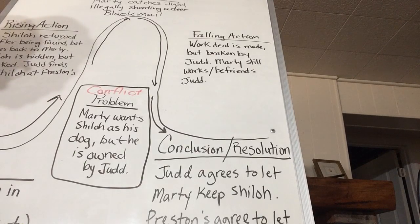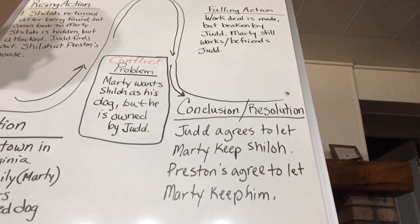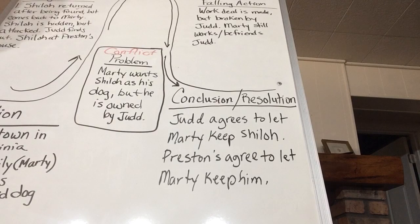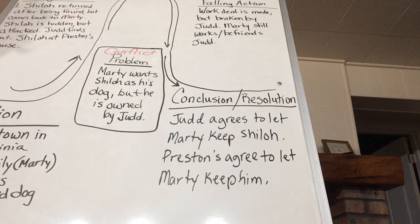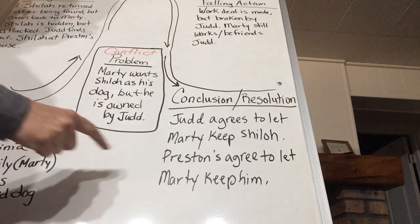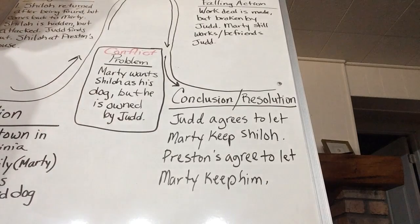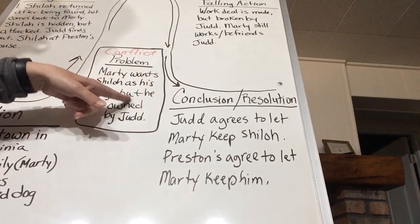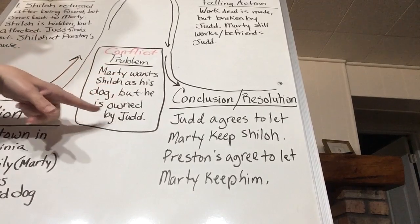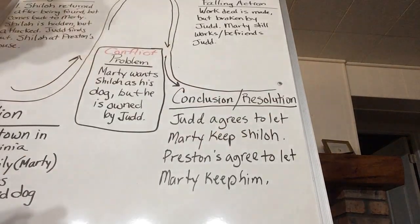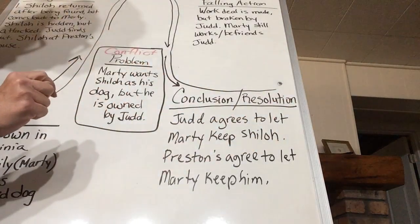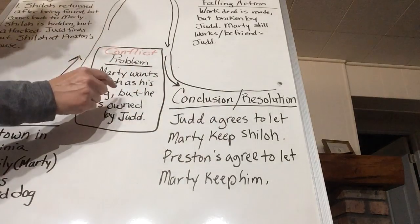Then we get to the conclusion. Judd finally agrees to let Marty keep Shiloh, but there's still another part — remember, mom and dad had said the whole time that they don't have enough money. So Marty still has to get his parents' permission, and he does get their permission, and then he gets to keep Shiloh. The problem — Marty wants Shiloh but he is owned by Judd — gets resolved. That's why we call it a resolution: it's when Judd gives Marty the dog.